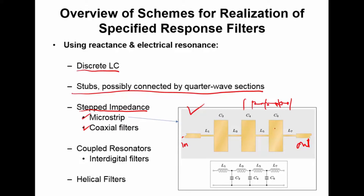Each section of transmission line has a different width — some wide, some narrow — so the characteristic impedance of these lines is changing. We have Z01 here, Z02 here, Z03 here, and so on. Each one of these maps relatively cleanly to either a parallel or series inductance or capacitance.